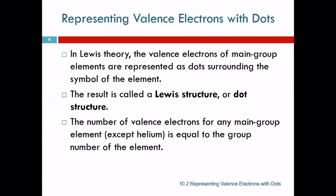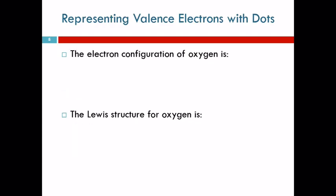We learned that when we're talking about electron configurations. So let's look at oxygen and draw a Lewis structure for oxygen. First we're going to look at the electron configuration. This is a review from chapter nine.